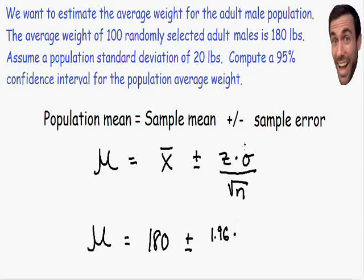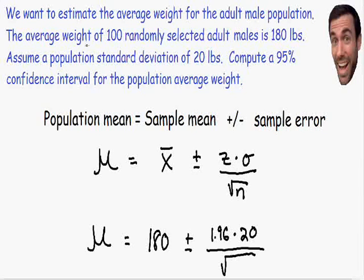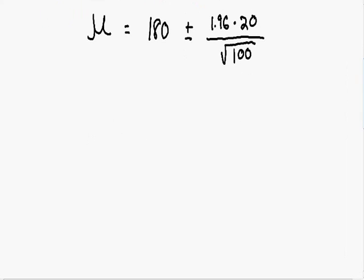This is multiplied by our population standard deviation of 20 pounds, all divided by the square root of N. N is the number in our sample size — we have 100 randomly selected adult males, so N equals 100. So the population mean equals 180 plus or minus 1.96 times 20 over the square root of 100. Simplifying this gives 3.92.